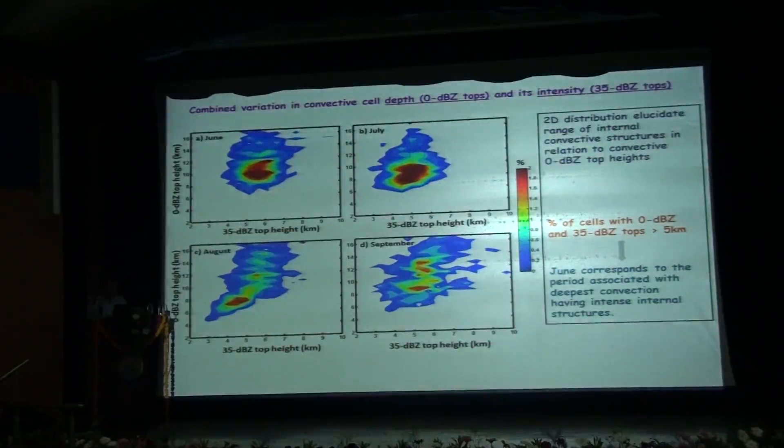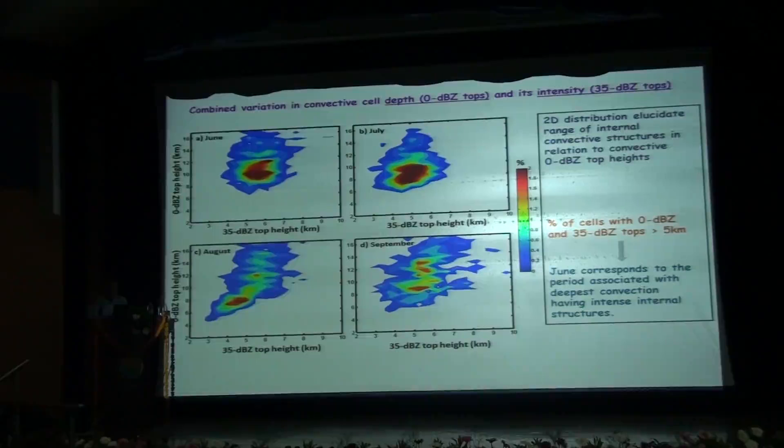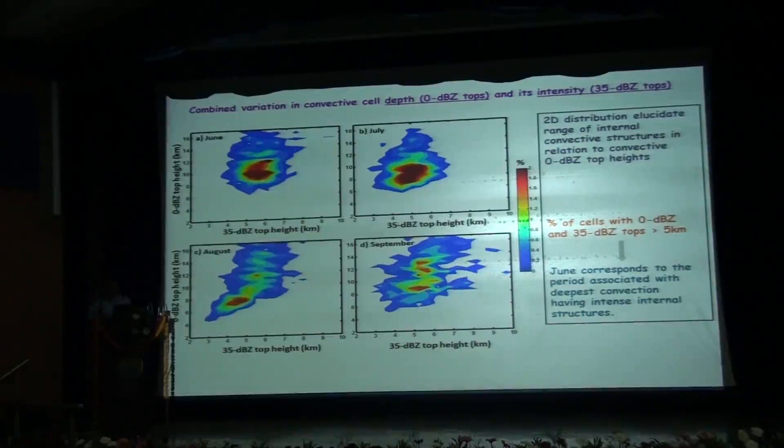We now investigate the combined variation in the convective cell depth prescribed by the 0 dBZ top heights and intensity prescribed by the 35 dBZ top heights. Here we have the 2D distribution of the 0 dBZ and 35 dBZ tops. The color of each contour represents the percentage of cells in each 0 dBZ and 35 dBZ height bin. The 2D distribution elucidates a range of internal convective structures in relation to the convective 0 dBZ top heights. We evaluated the percentage of cells with 0 dBZ tops greater than 5 km as well as 35 dBZ tops greater than 5 km. The highest percentage was found during the month of June which was the onset month. Thus June corresponded to the period associated with deepest convection having intense internal structure. We can see here that the highest contour exceeds 6 km for the month of June, but for other months like July, August and September, the highest contour is much below 6 km level.